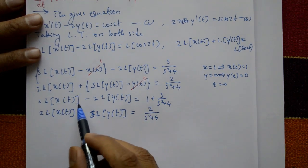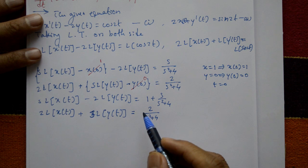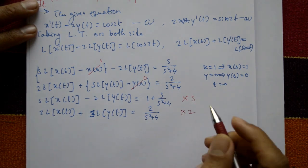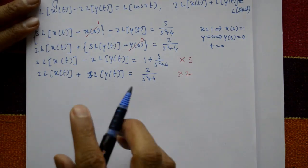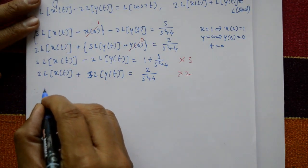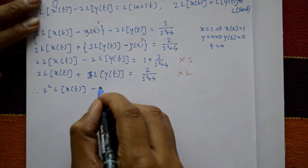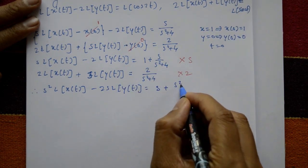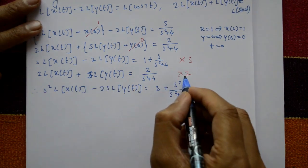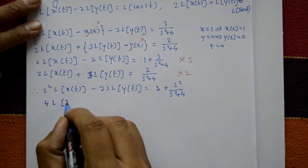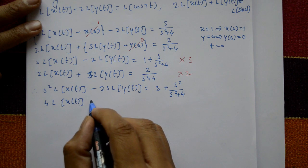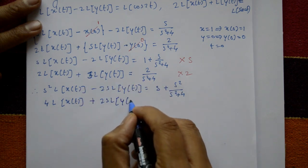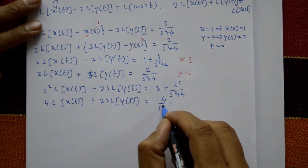To eliminate L{y(t)}, multiply the first equation by s and the second equation by 2. This gives: s²·L{x(t)} minus 2s·L{y(t)} equals s plus s²/(s²+4), and 4·L{x(t)} plus 2s·L{y(t)} equals 4/(s²+4).